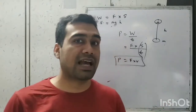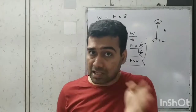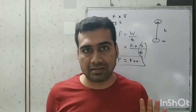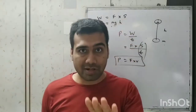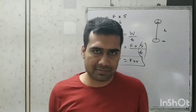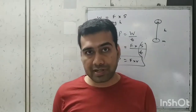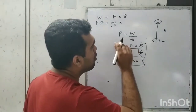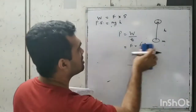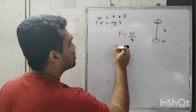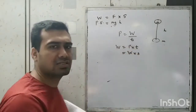Energy, like work, is a scalar quantity — it has no direction, even though force and displacement are vector quantities. The SI unit is joule. Since power = work / time, we can cross-multiply to get work = power × time, that is watt × second = one joule.